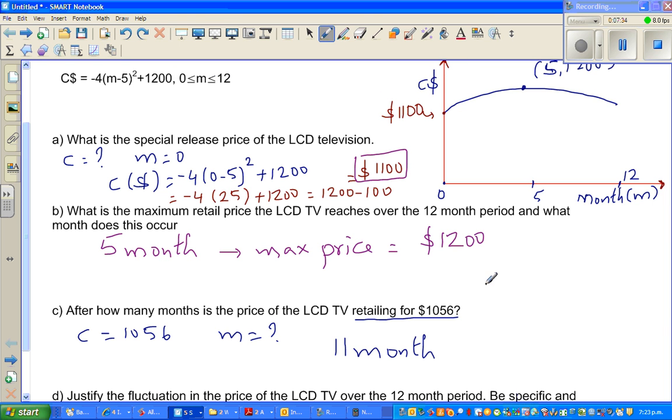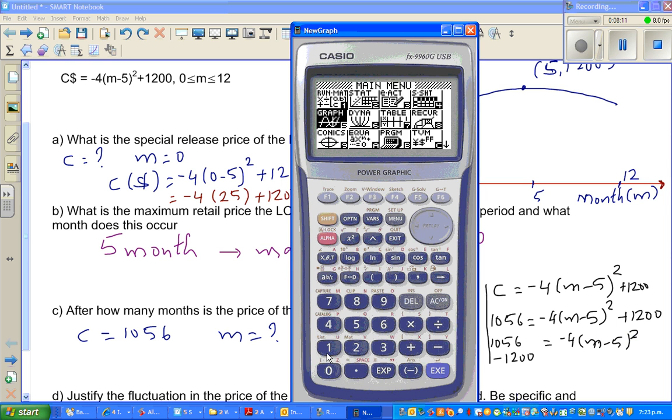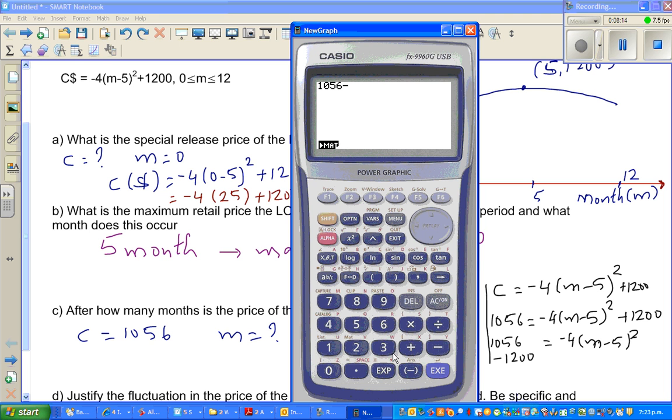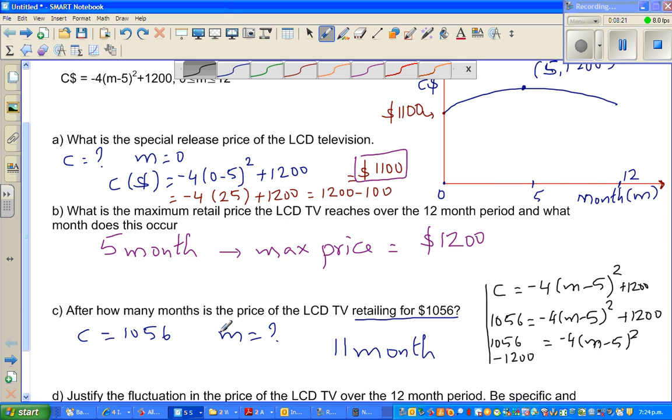So the equation is C equals minus four times M minus five squared plus 1200. So I have to put 1056 here. So 1056 equals minus four times M minus five squared plus 1200. If you take away 1200 from both sides, 1056 minus 1200 equals minus four times M minus five squared. So 1056 minus 1200 gives me minus 144.